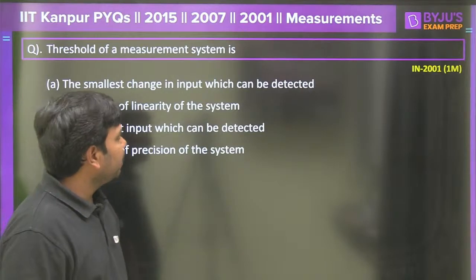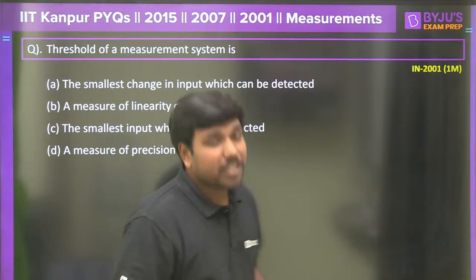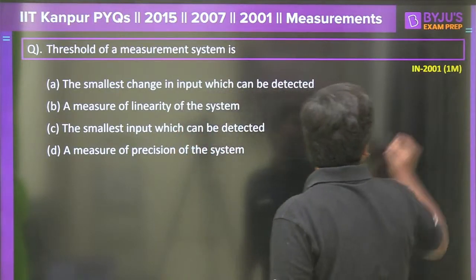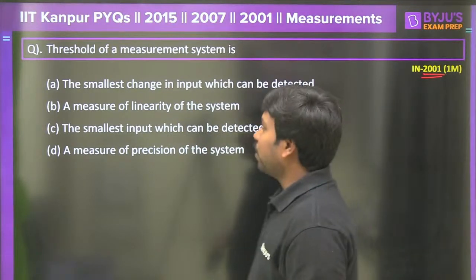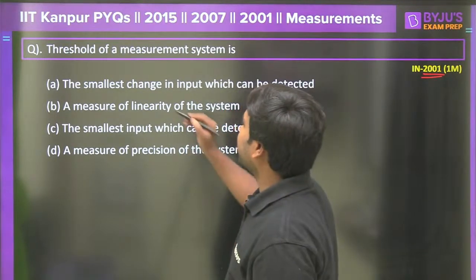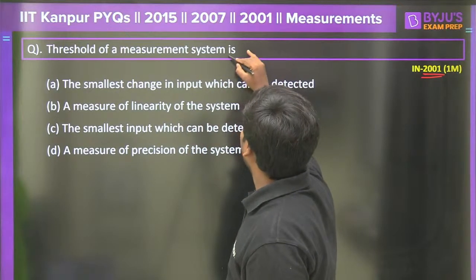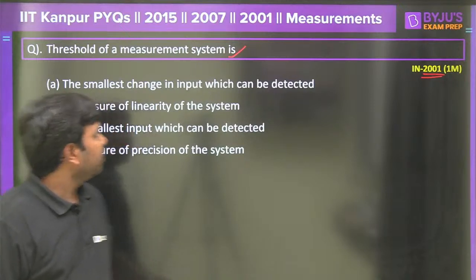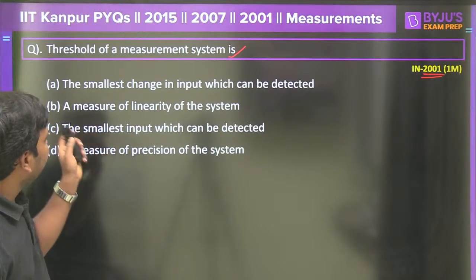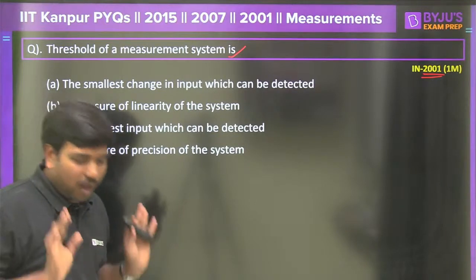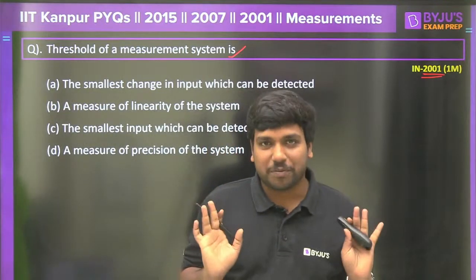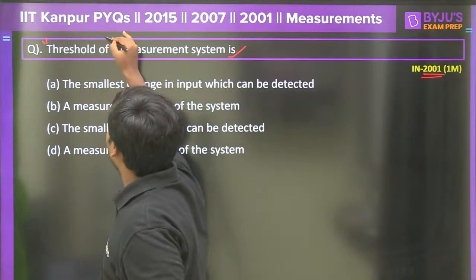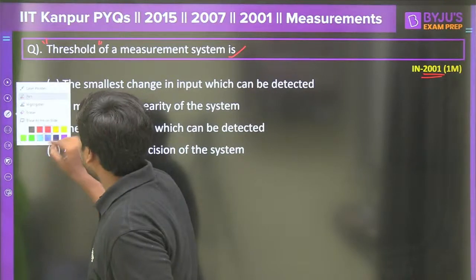Let's go to the first question of the day, from statistical analysis, asked in the year 2001 for one mark. The statement is: 'Threshold of a measurement system is dash.' There are four options and you have to select one. What do you mean by threshold? It is very easy to answer.